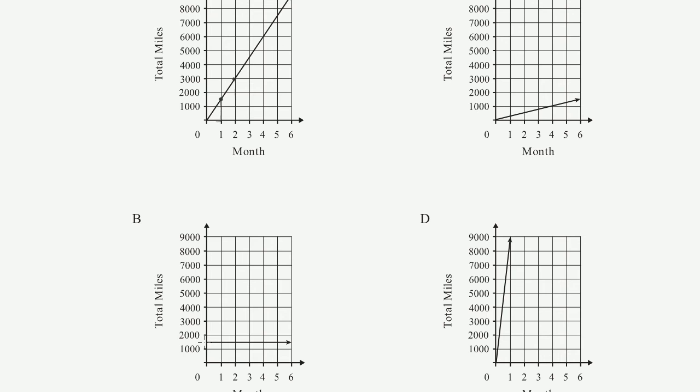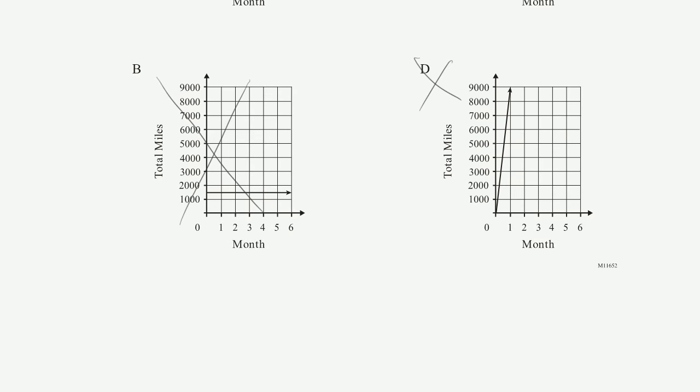Choice B shows he started off having traveled 1,500 miles, and it never changes. He doesn't travel anymore. So it's definitely not choice B. And then choice D, after one month, he travels 9,000 miles, which is completely wrong. They said per month he travels 1,500 miles. So it's definitely not choice D. So choice A, we can feel good about.